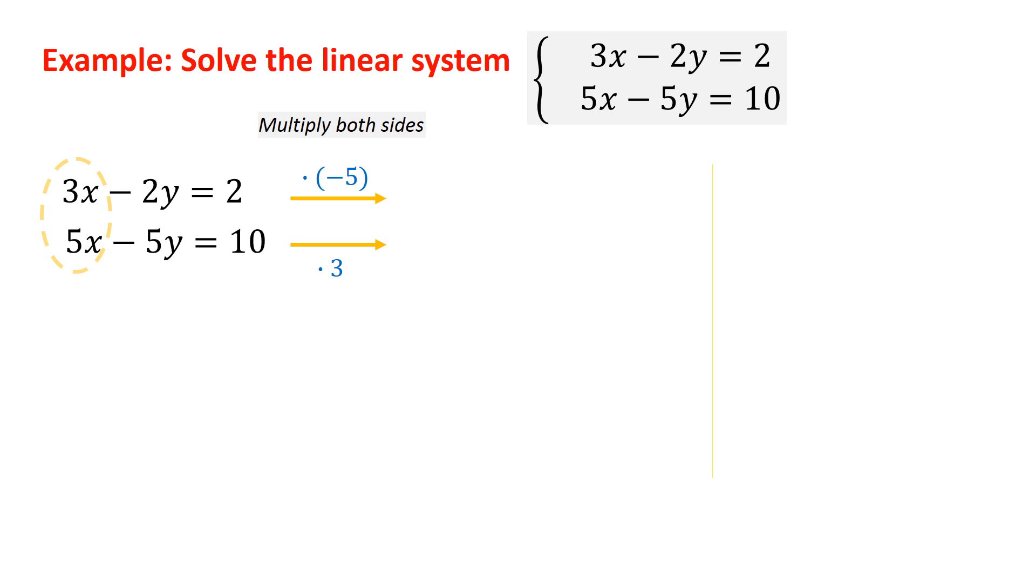And here we go ahead and multiply. Again, make sure you multiply both sides. And we get the following. Take your time when you're doing this. Do it correctly. The x values are now additive inverses. They cancel out. And we go ahead and combine the rest of the system. We get negative 5y equals 20. y is being multiplied by negative 5. So, we divide both sides by negative 5. And we get that y equals negative 4.